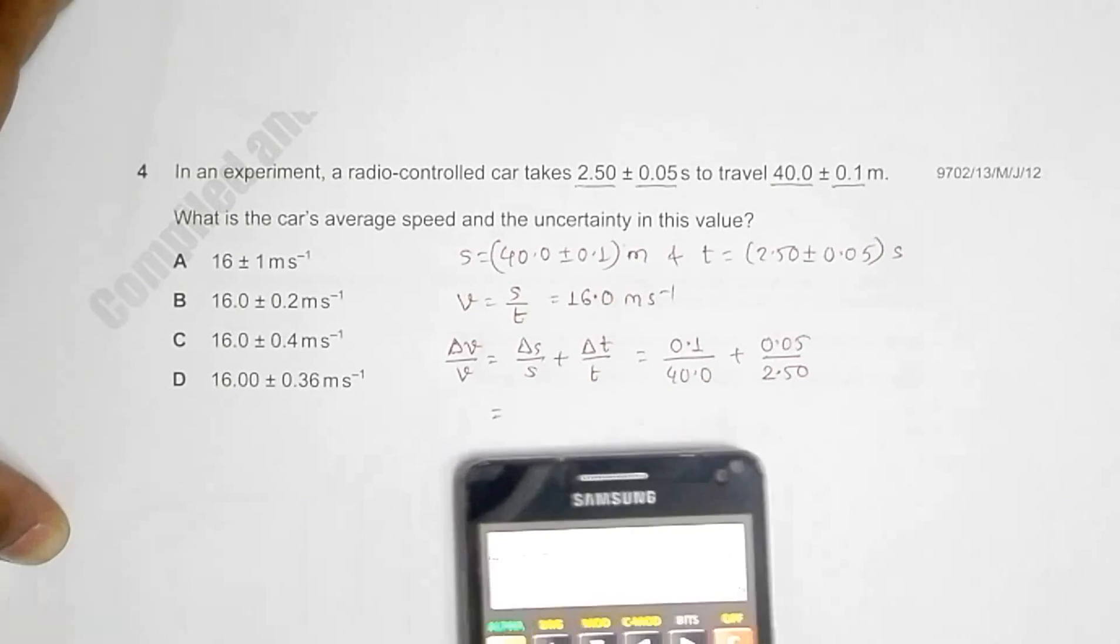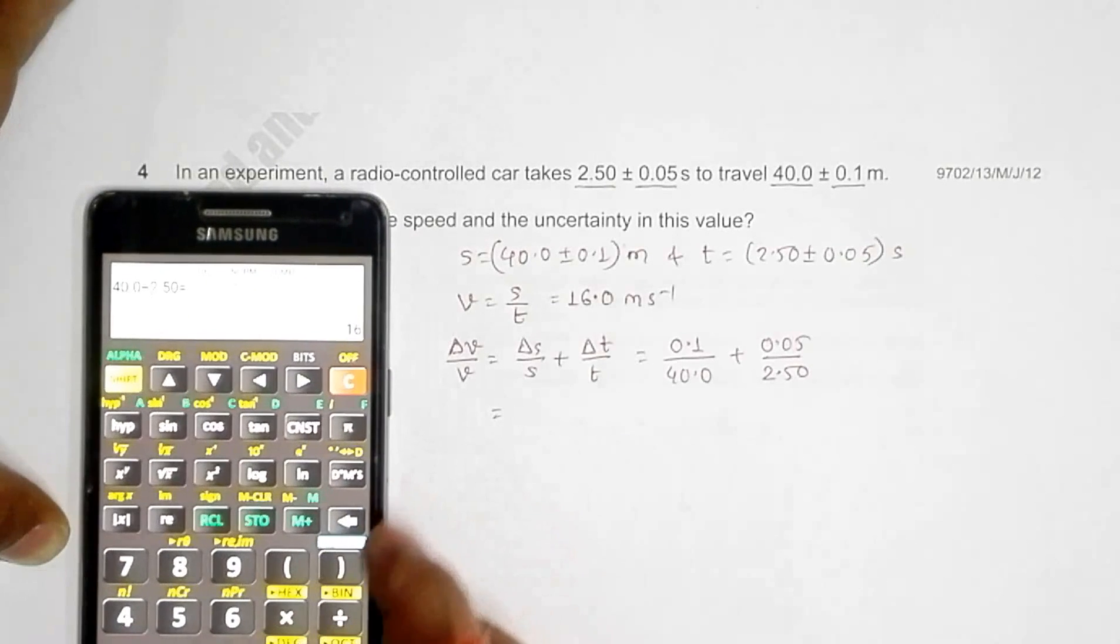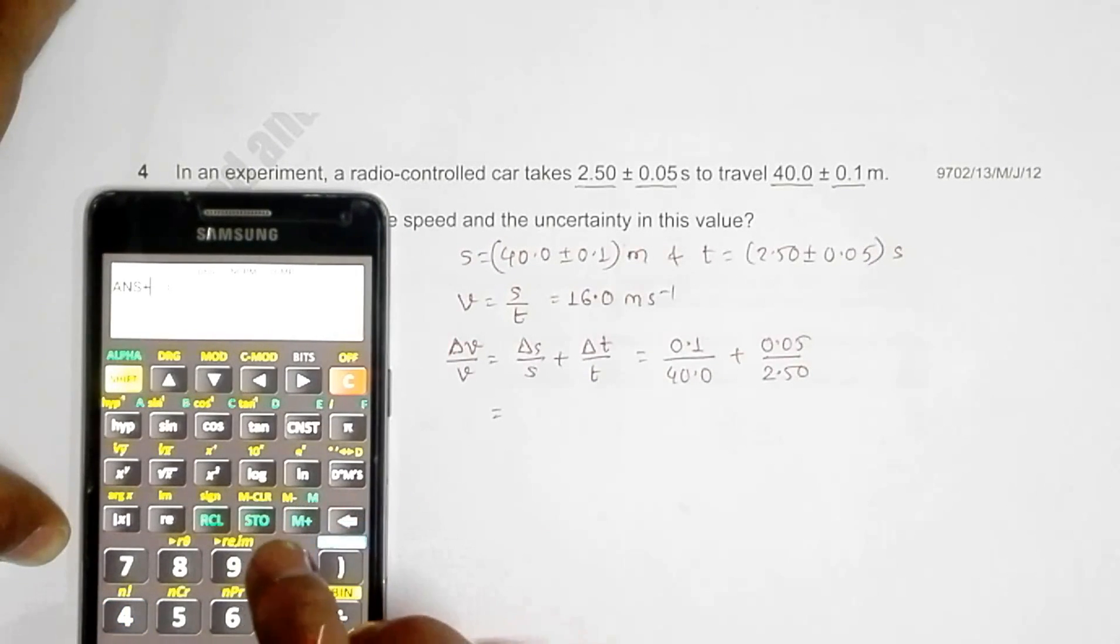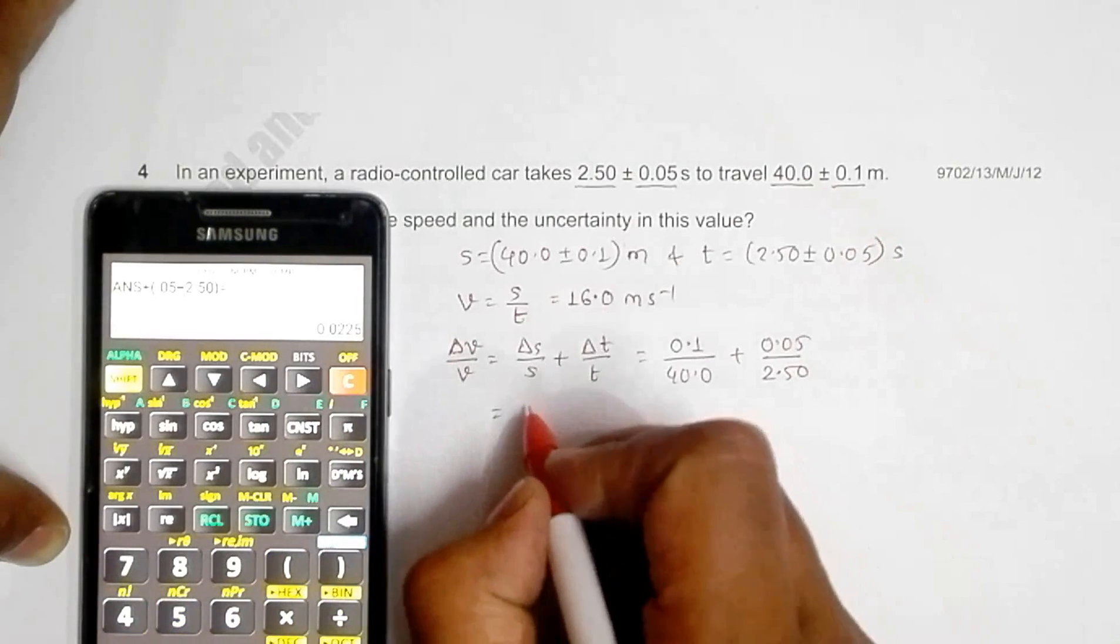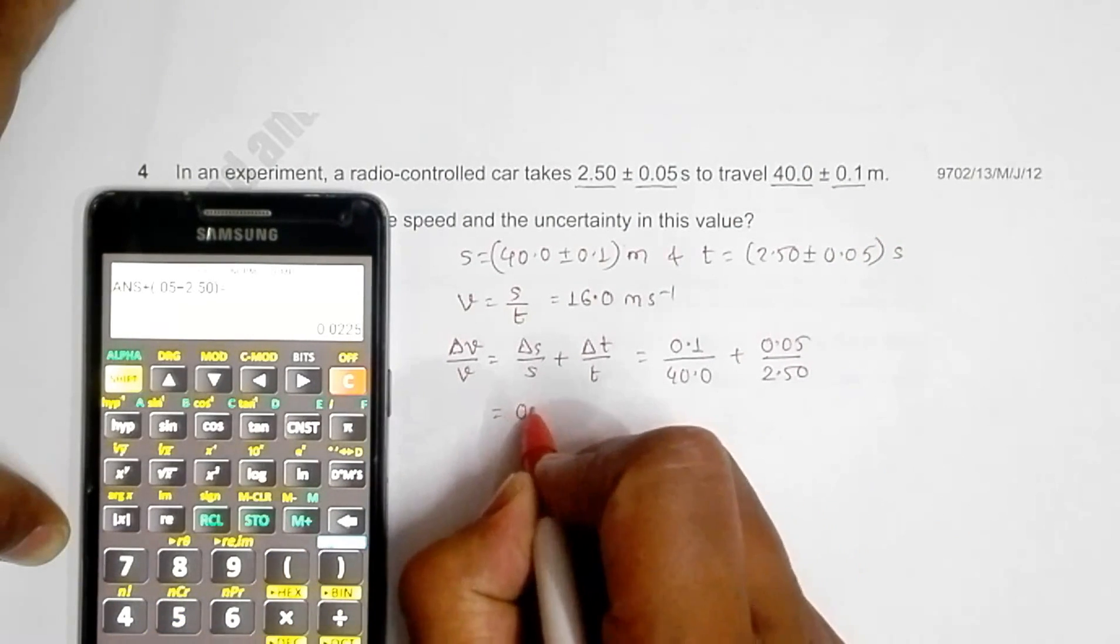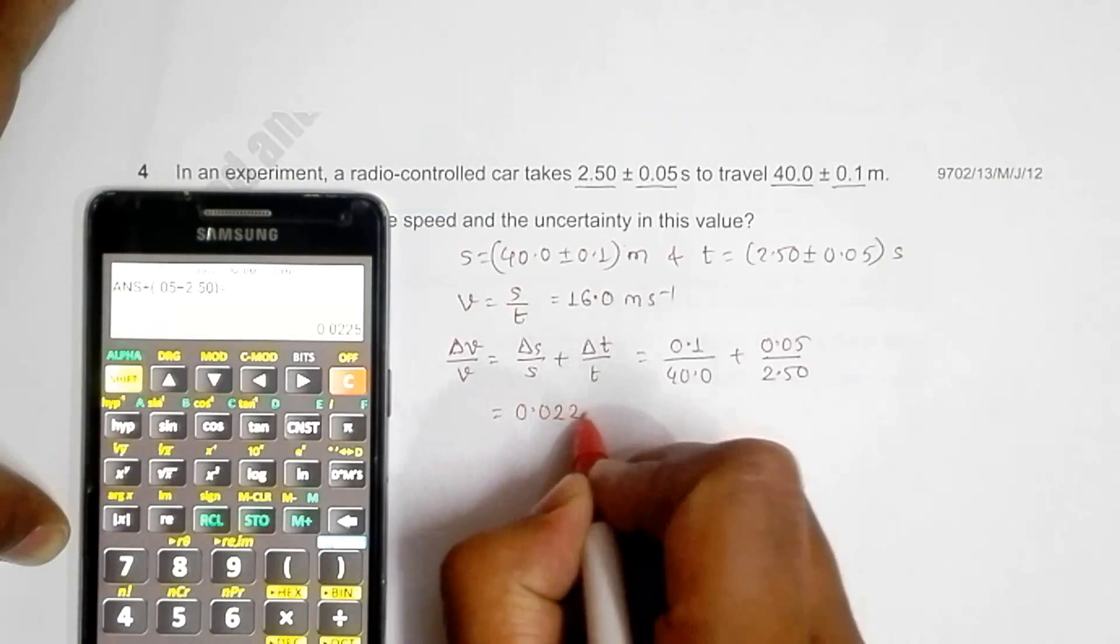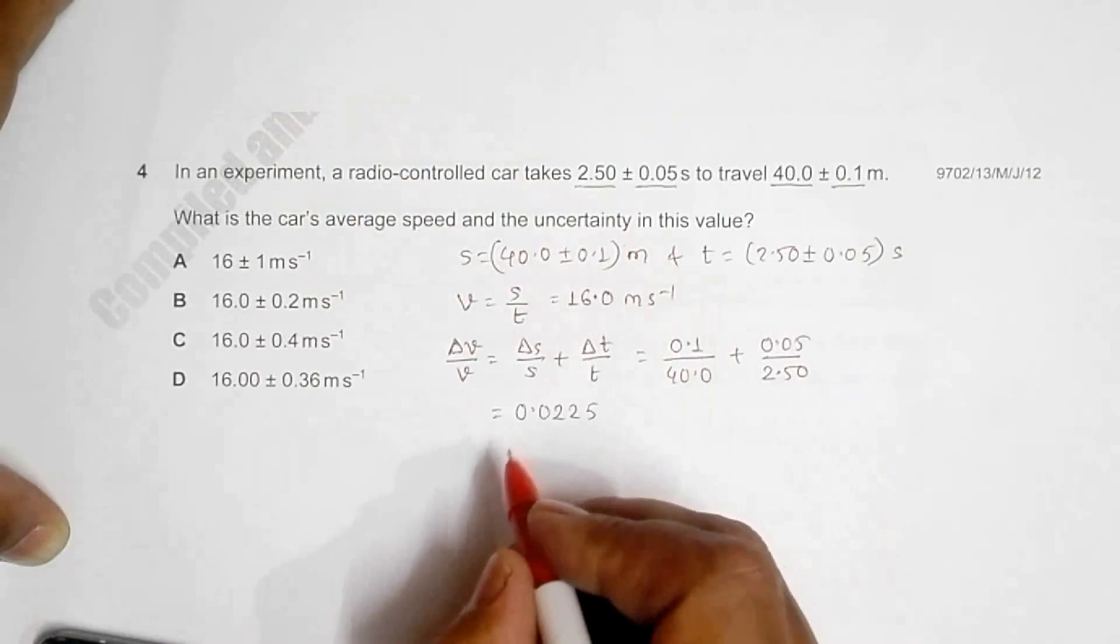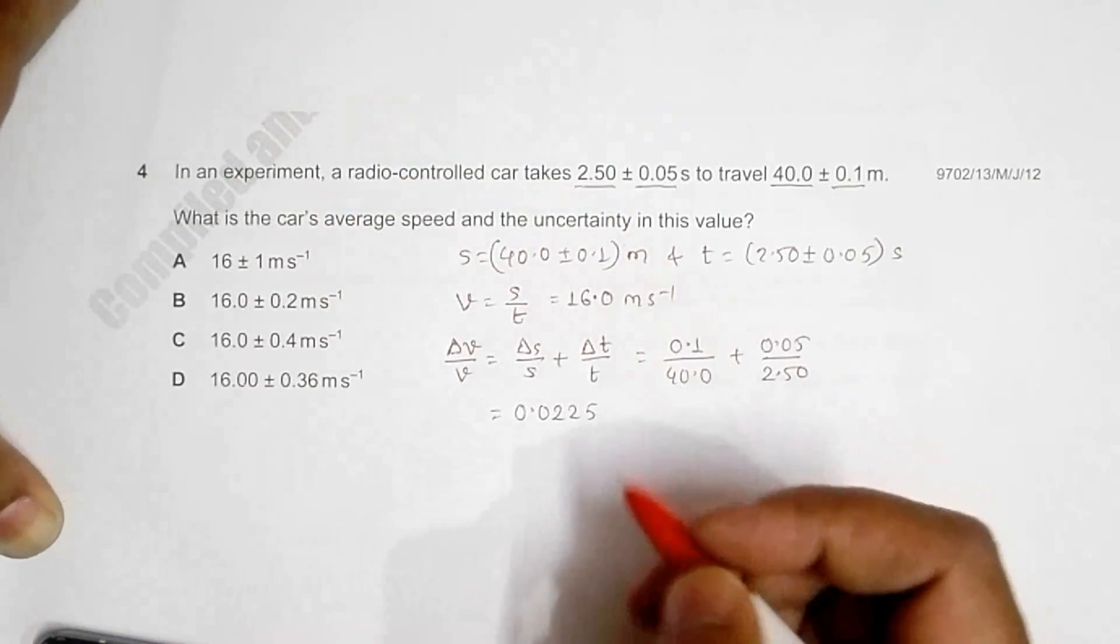So this will be 0.1 divided by 40.0 plus 0.05 divided by 2.50. This whole value is equal to 0.0225.